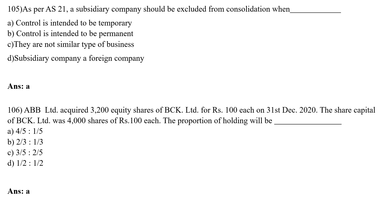As per Accounting Standard 21, a subsidiary company should be excluded from consolidation when: Option A — control is intended to be temporary; Option B — control is intended to be permanent; Option C — they are not similar type of business; Option D — subsidiary company is a foreign company. The correct answer is Option A — control is intended to be temporary. So as per AS-21, a subsidiary company should be excluded from consolidation when control is intended to be temporary.